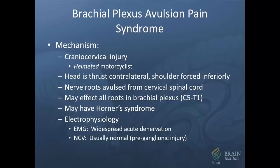Electrophysiologically, and after several weeks, an EMG will show widespread muscle denervation relating to the avulsion of the ventral roots. Paradoxically, the nerve conduction study is usually normal, due to the preganglionic nature of the injury. That is, the dorsal root ganglion is avulsed with the dorsal root, thus preserving the integrity of the peripheral nerves, despite their separation from the spinal cord.